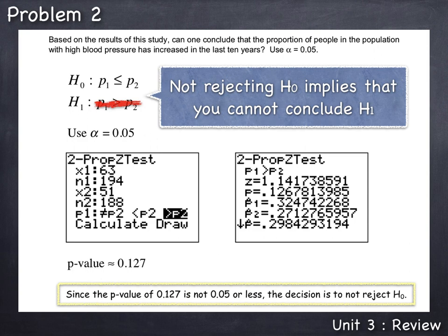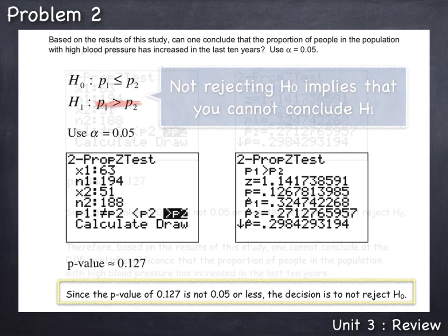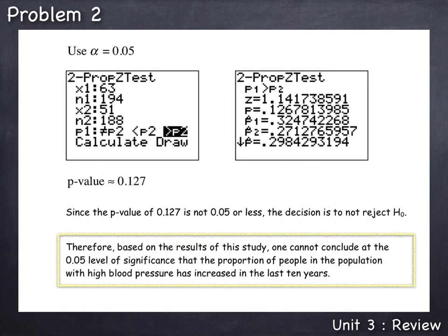Therefore, based on the results of this study, one cannot conclude at the 0.05 level of significance that the proportion of people in the population with high blood pressure has increased in the last 10 years. Thank you. Take care.